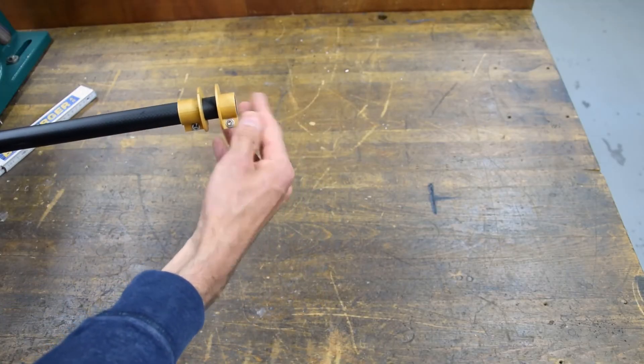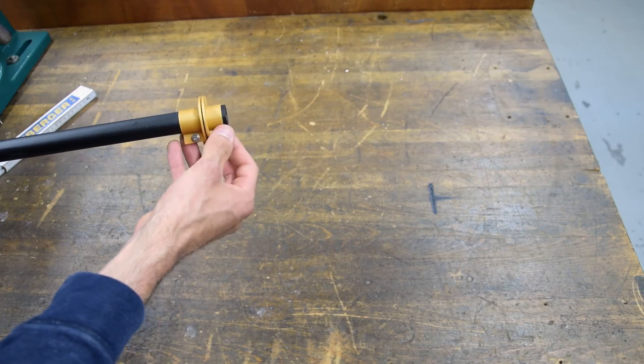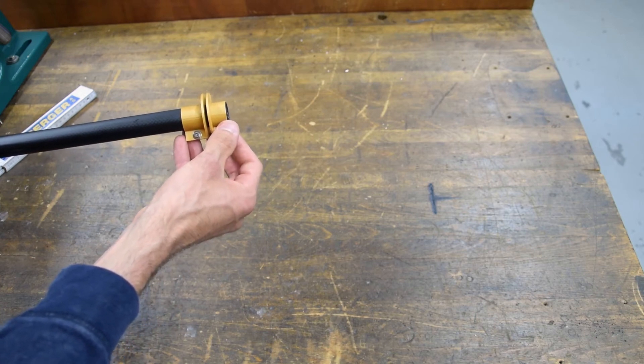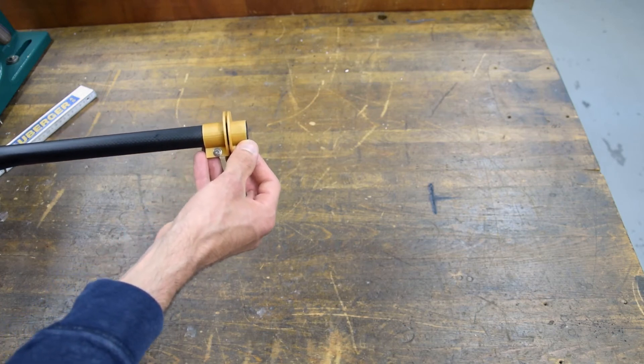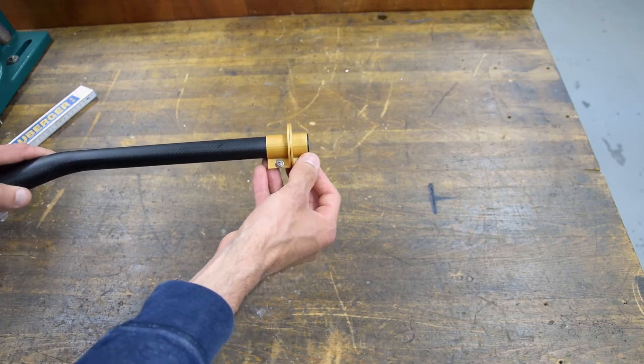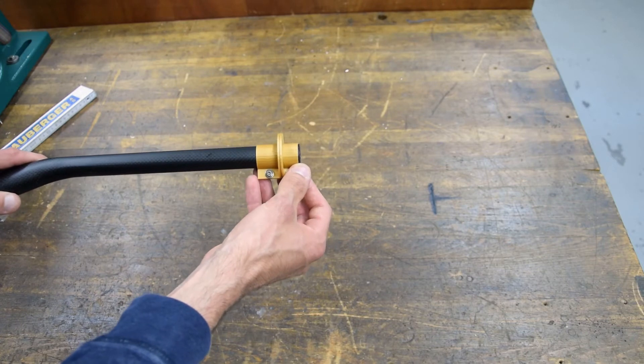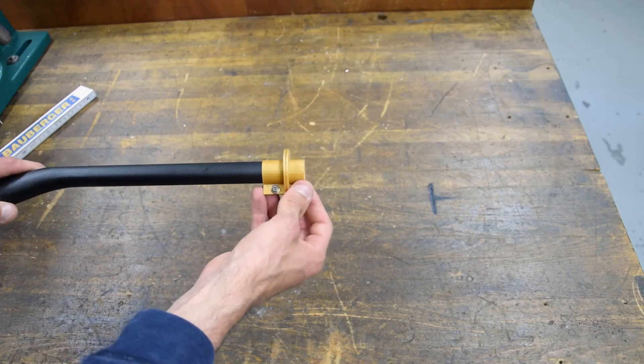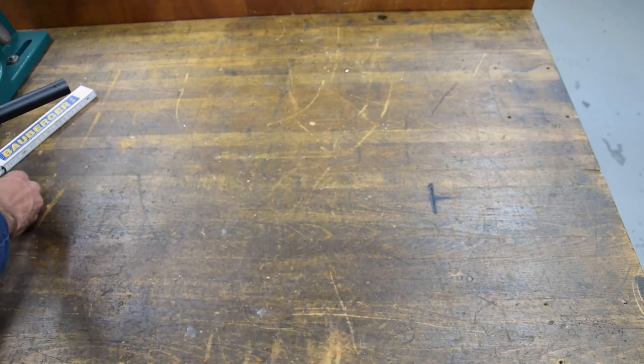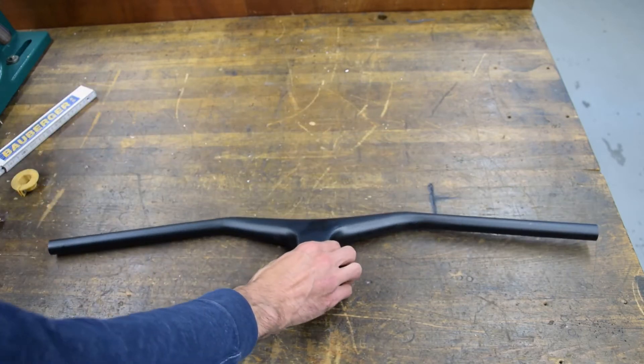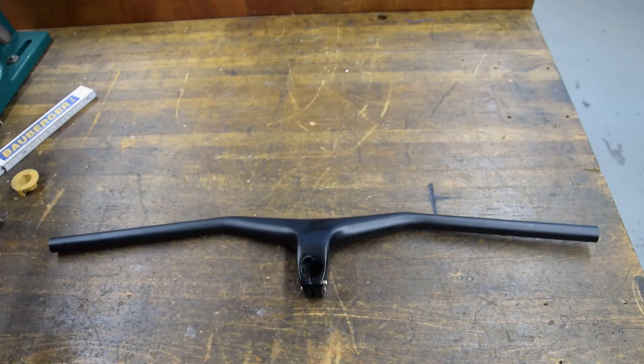So we can clamp it. We first mount one part and then the other one, and then we can clamp together the two parts. Then with the saw we can exactly cut perpendicular to the axis of the handlebar and we get a clean cut. So let's saw the handlebars.